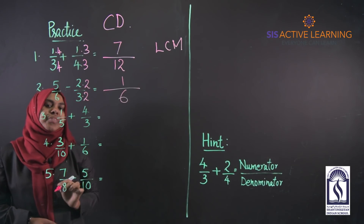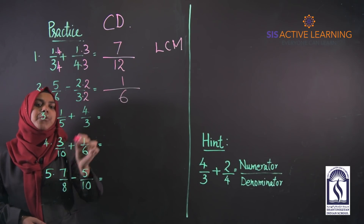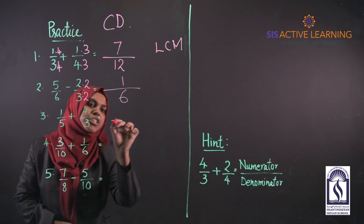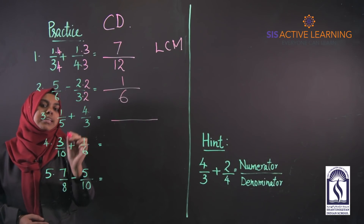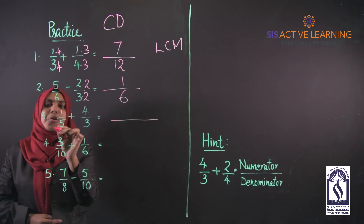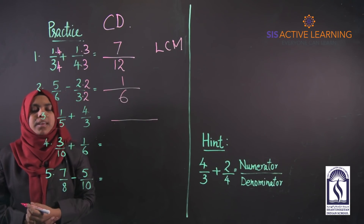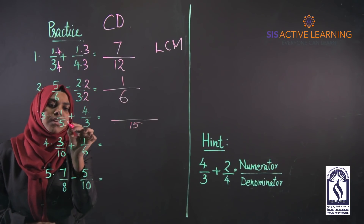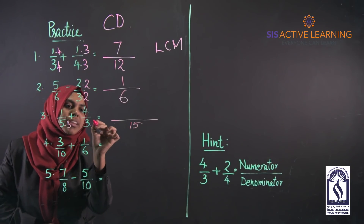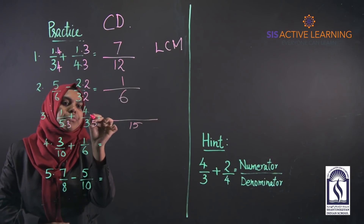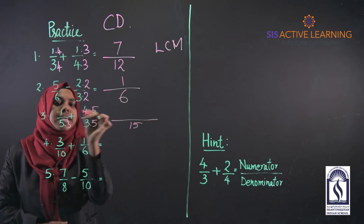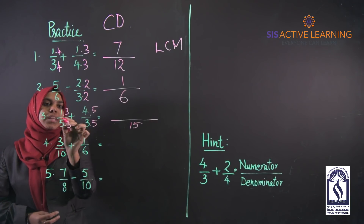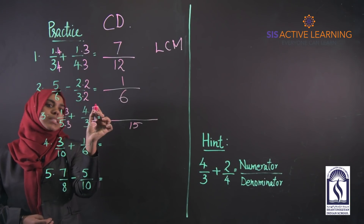Next, denominators 5 and 3. To find the common denominator, the LCM of 5 and 3 is 15 — 5 × 3 = 15 and 3 × 5 = 15. We do the same operation in the numerator as well, giving us 3 + 20 = 23 as the numerator, so the answer is 23/15.